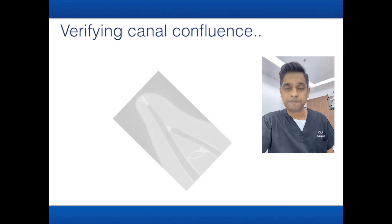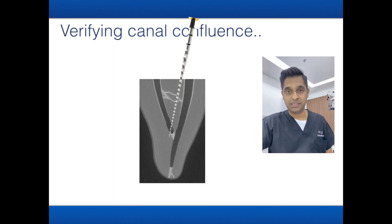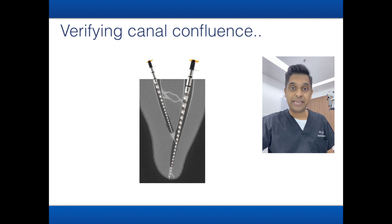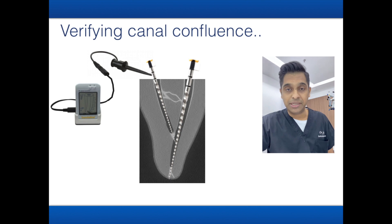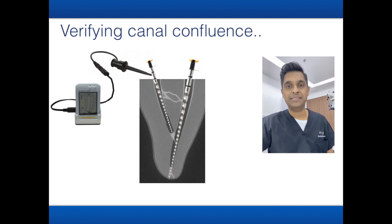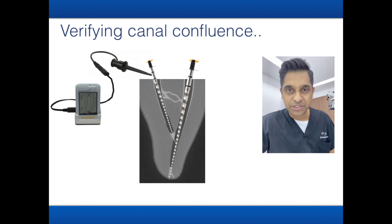To verify canal confluence, place your file in the mesial lingual canal all the way to the apex as determined by the apex locator, and leave the file there. Then place your file in the mesial buccal canal and connect your apex locator. When the file touches the other file at the merging point, the apex locator will indicate that the file is at the apex — this is a very classic and reliable sign of confluent canals using an electronic apex locator.